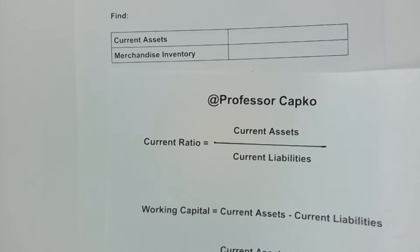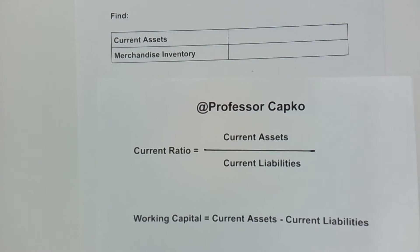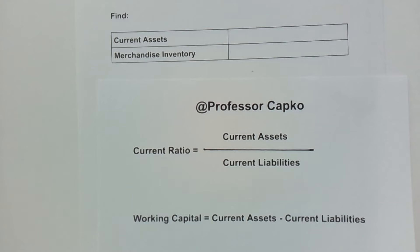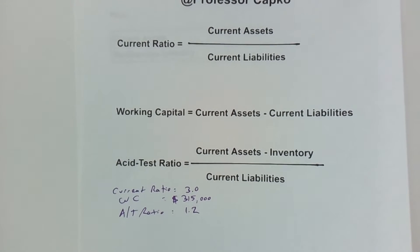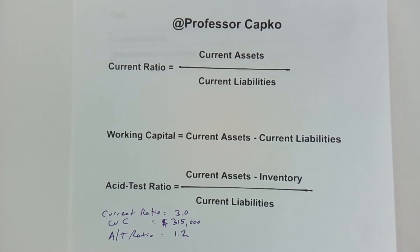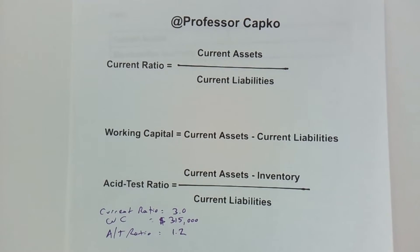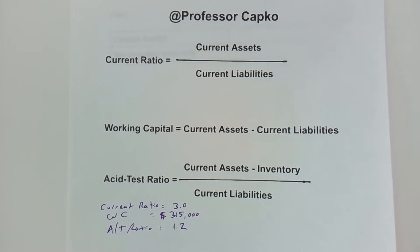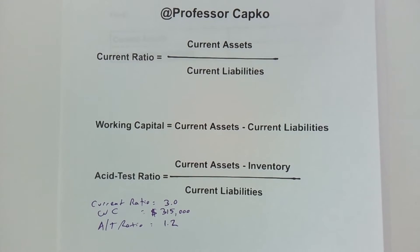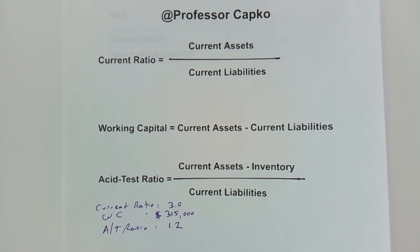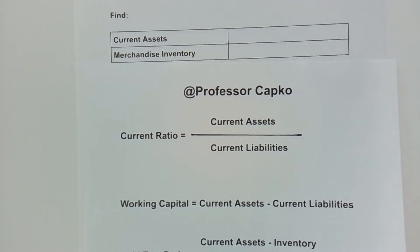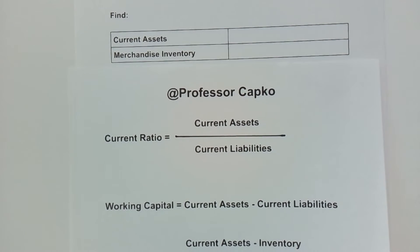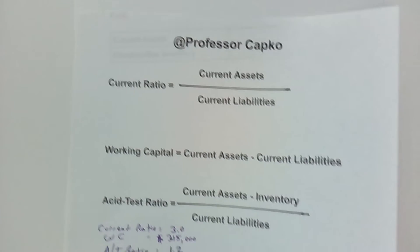We need to figure out how to find the current assets and the merchandise inventory when we're just given these ratios. We're going to have to use these formulas and put the information we do have into them and then manipulate them algebraically so that we can arrive at the current assets and the merchandise inventory. Follow along as I do that here.